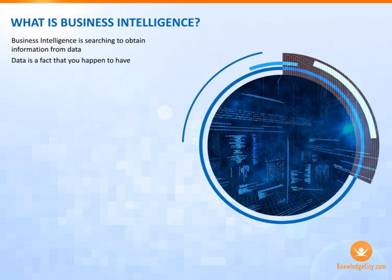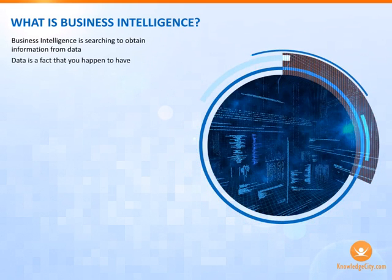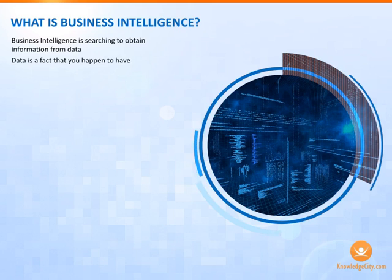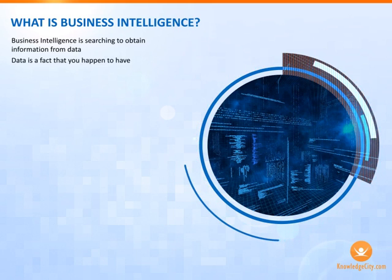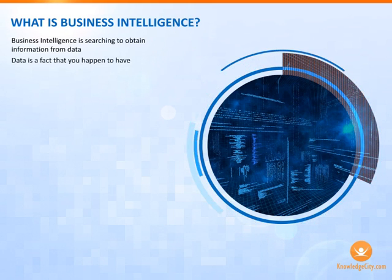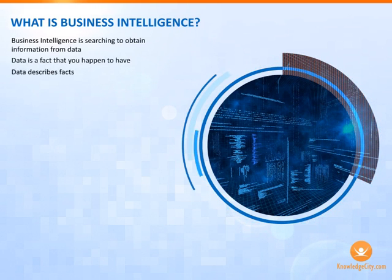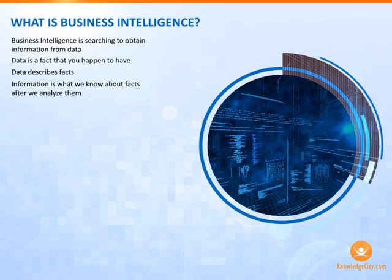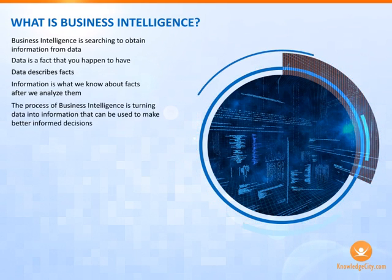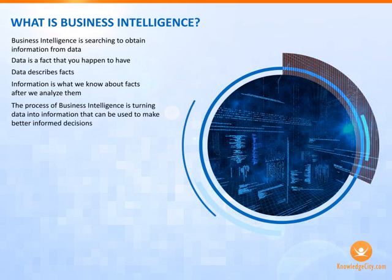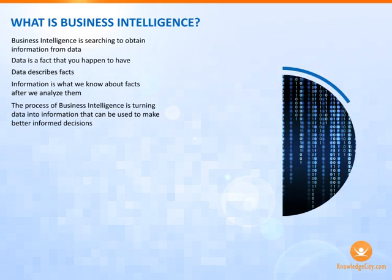For example, information might tell you that the three people who chose to subscribe to your site are 10% of visitors, or that they are 50% of visitors during the hour you are running a particular promotion. So, data describes facts. Information is what we know about facts after we analyze them. The process of business intelligence is exactly that, turning data into information that can be used to make better informed decisions.